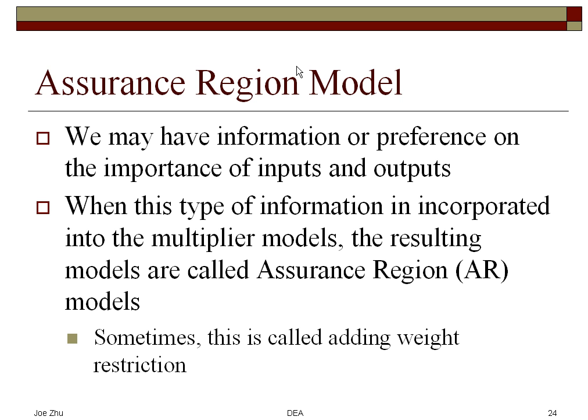This is the Assurance Region model. At the beginning we said that in DEA you don't have to have complete weight information on the weights. In most cases you don't have any information on the weights or the trade-offs between inputs and outputs. But sometimes you may have some type of preference over the inputs and outputs, and in a sense you have some sort of fuzzy information on those weights or multipliers, and you should add that information into the DEA model. The result of the DEA model incorporating this is called the Assurance Region model.